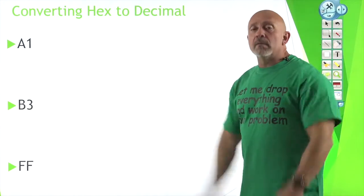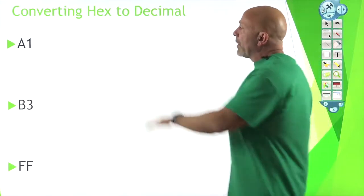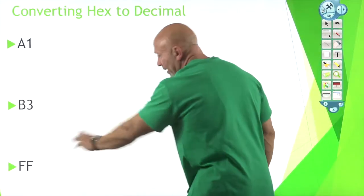All right, the moment we've been waiting for. Converting hex to decimal. So we pick some easy numbers: A1, B3, FF.